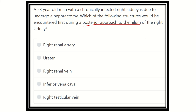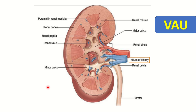We have to look at the different structures located at the hilum of the kidney and find out the most posterior structure. The options are: right renal artery, ureter, right renal vein, inferior vena cava, and right testicular vein. Looking at the hilum here, viewing the kidney from the anterior side, we can see first the renal vein, then the renal artery, then the renal pelvis or ureter.